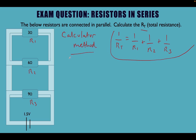In order to use the calculator method, we need to be aware of a specific button on our calculator. It looks like x to the minus 1. That's basically a reciprocal function, which is what we're dealing with here — these are all reciprocals. On your calculator, look for this button, which may also look like 1 over x. That's the reciprocal button — remember that.